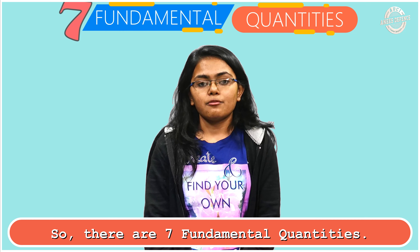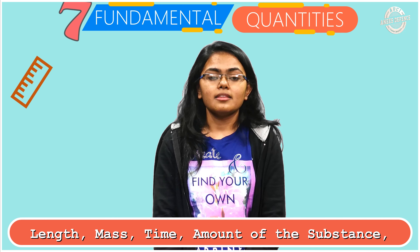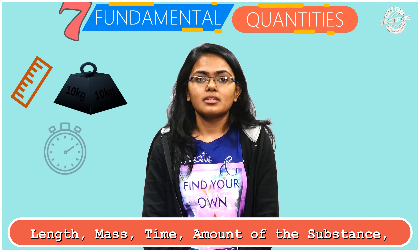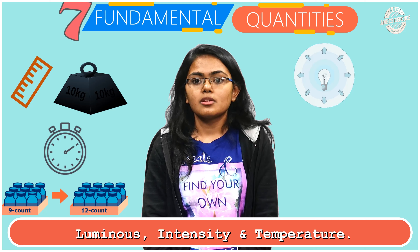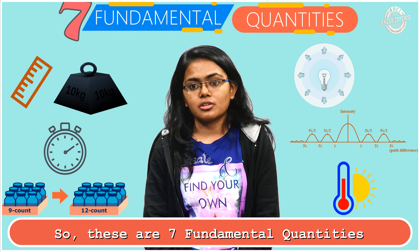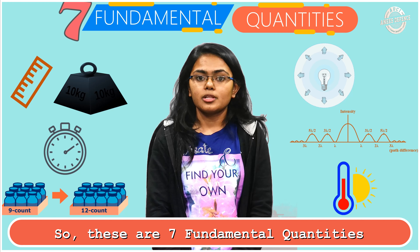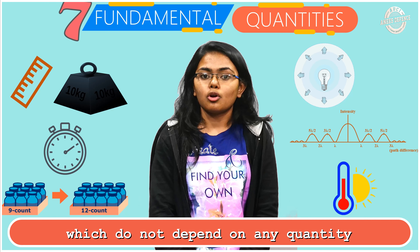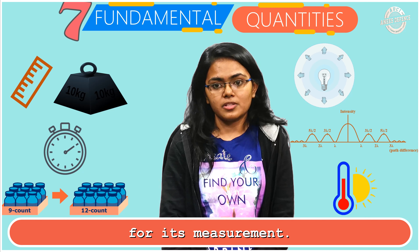There are seven fundamental quantities: length, mass, time, amount of substance, luminous intensity, and temperature. These are the seven fundamental quantities which do not depend on any other quantity for their measurement.